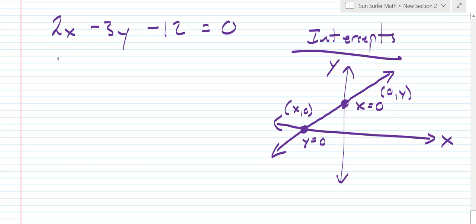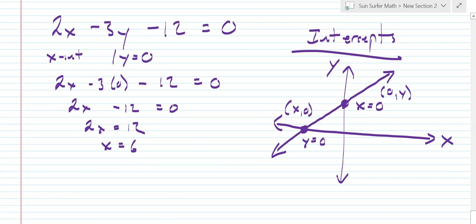So to find the intercepts, let's start by finding the x intercept. To find the x intercept, we let y be equal to 0. So we would have 2x minus 3 times 0 minus 12 equals 0, or 2x minus 12 equals 0, 2x equals 12, or x equals 6. So that means that when y is equal to 0, x is equal to 6. And we write that together as an ordered pair, 6, comma, 0.